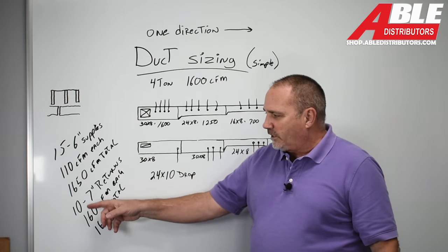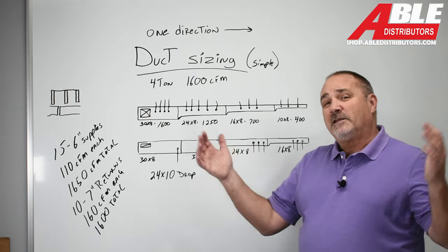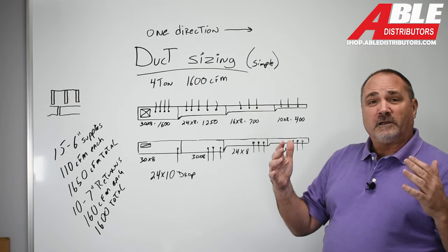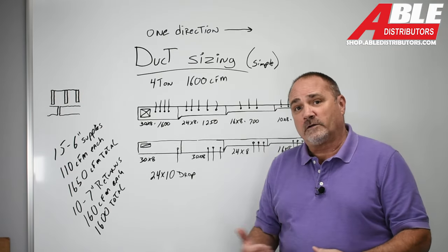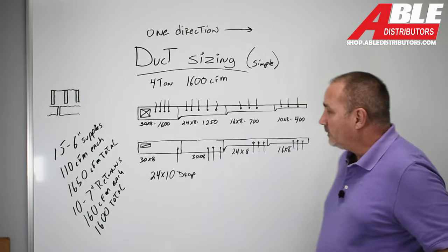And on the return duct, I figured 10 seven inch returns, 160 CFM a piece. Again, typically those runs are shorter because they're on inside walls. So you can actually get closer to 160 CFM out of each one for a total of 1,600. So let's get started.